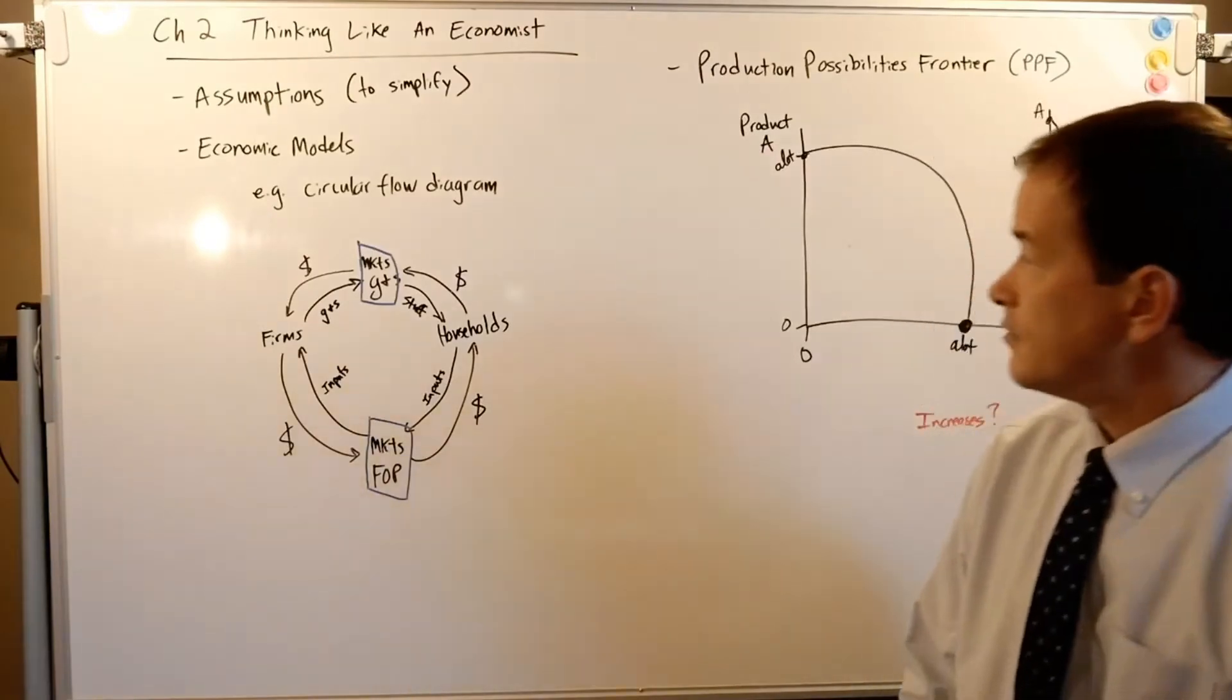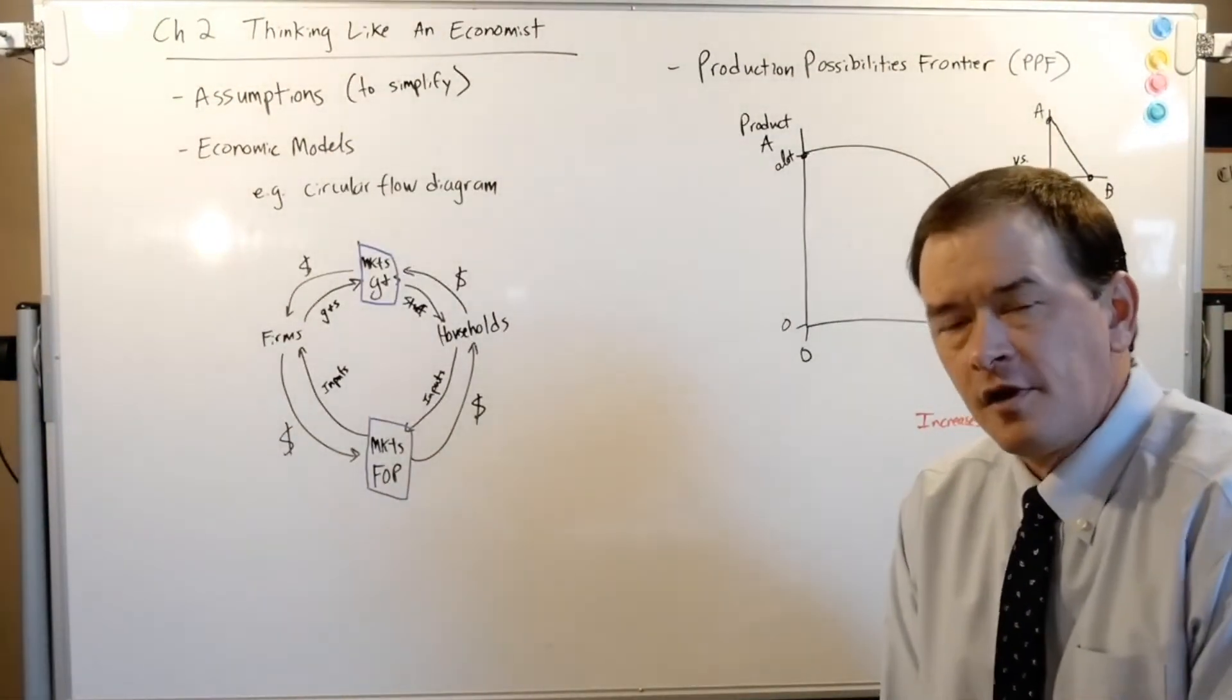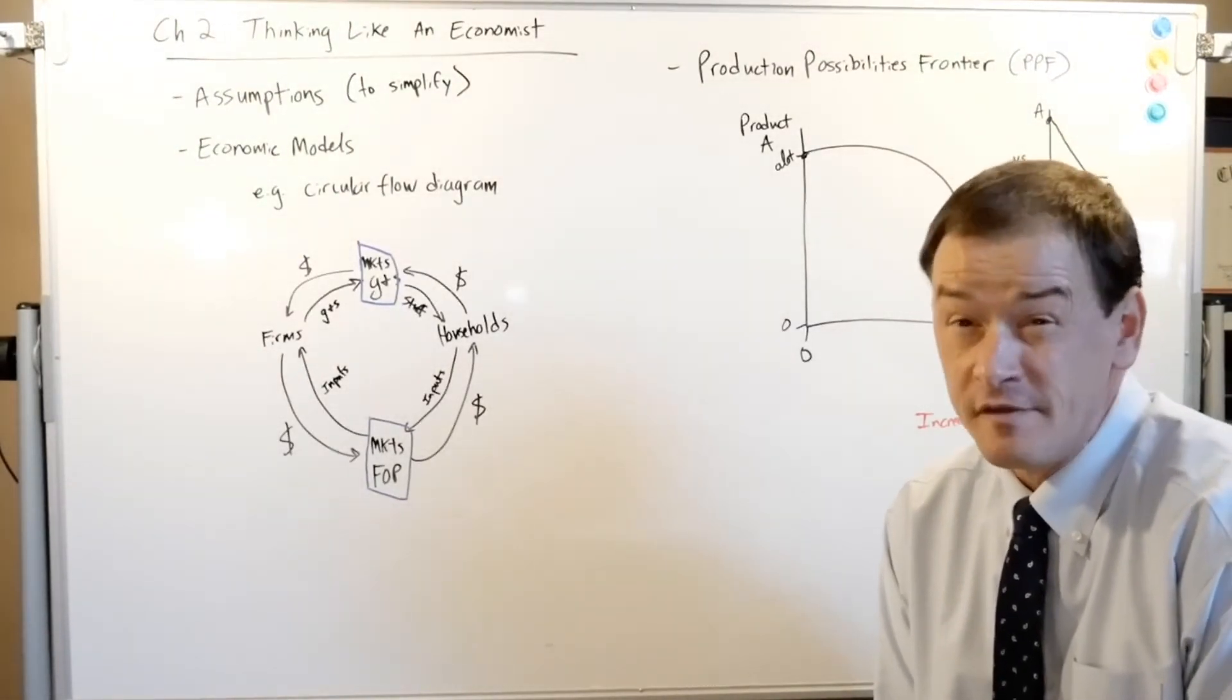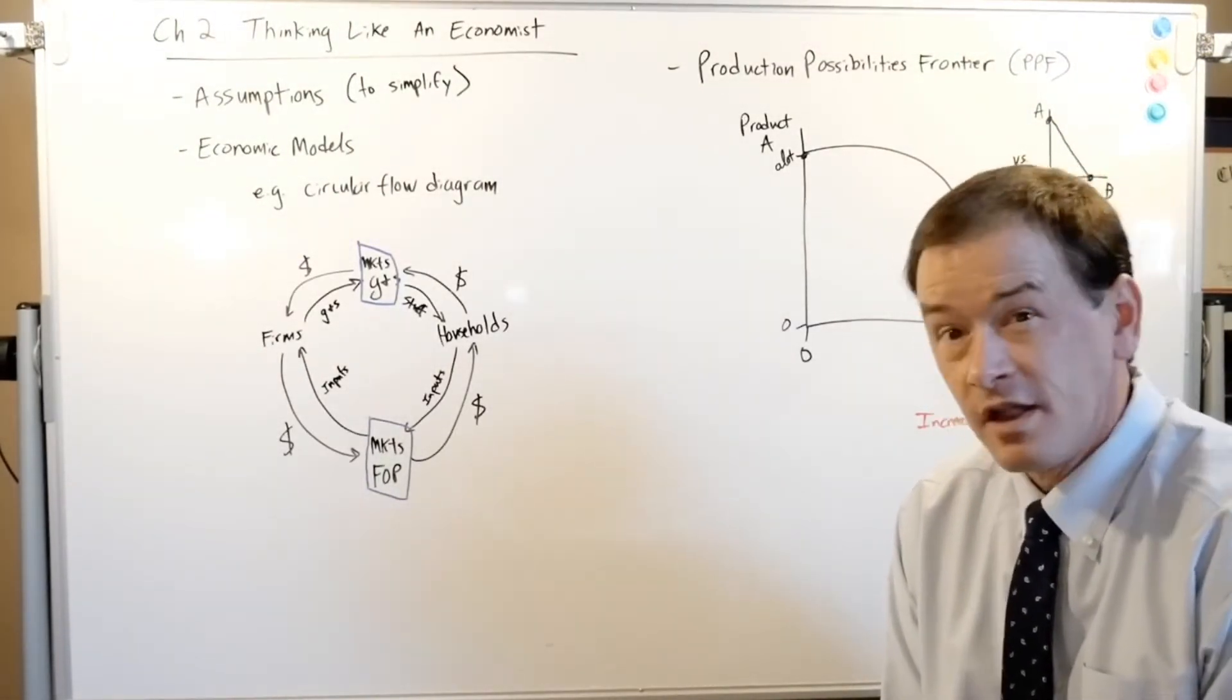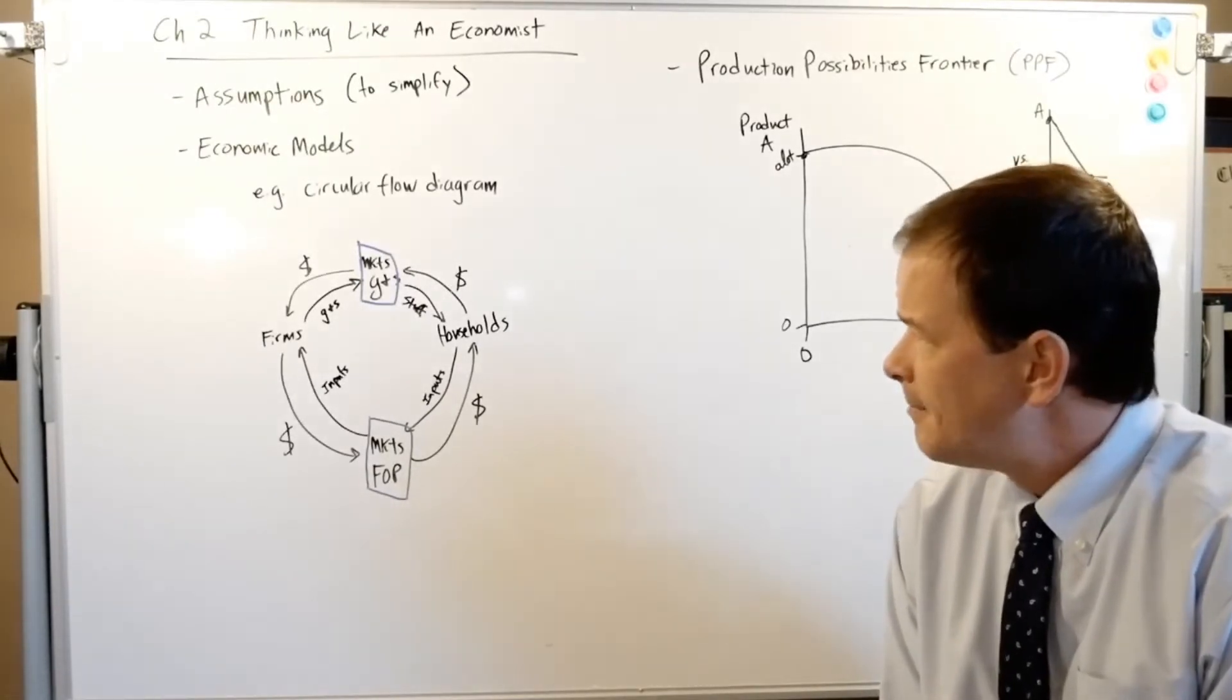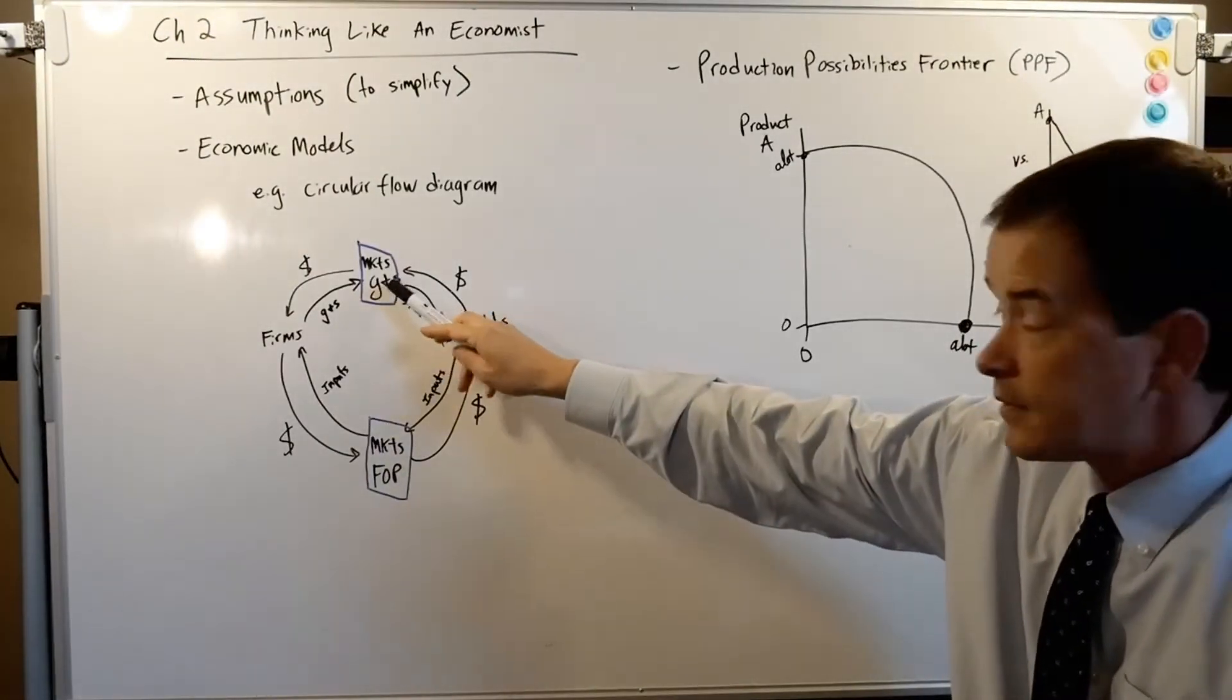Here's the thing, I like the circular flow diagram, it's very elementary, it's very basic. I don't think I'll ever ask you to draw it or anything on the test but you need to know that there are two different markets: there's market for inputs and there's a market for outputs.